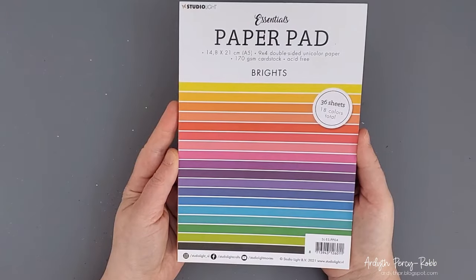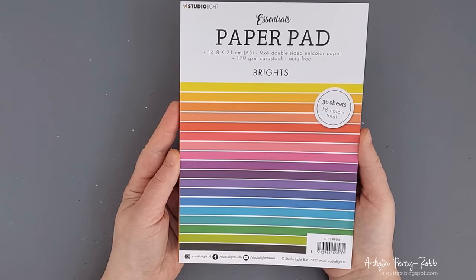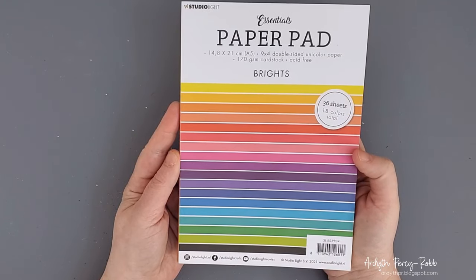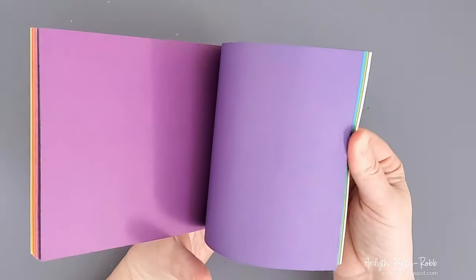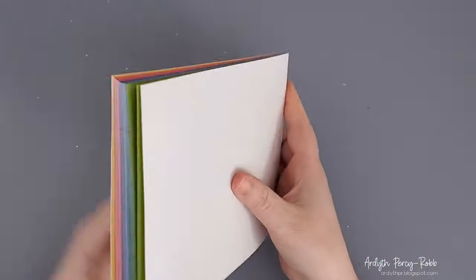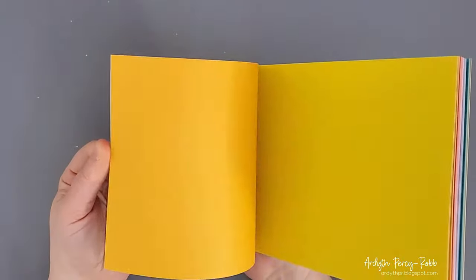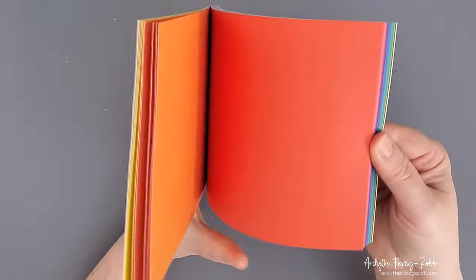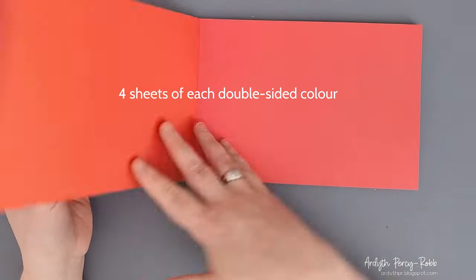To finish this card off, I used some paper from Studio Light which is sold at Canadian store Ecstasy Crafts. This pad has a full rainbow of colors with two matching shades on each piece. It's 170 GSM, which feels to me to be slightly thinner than 80 pound cardstock, which makes it great for matting and for die-cutting.